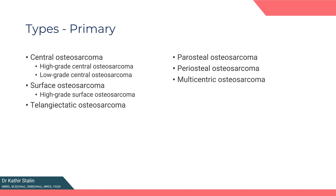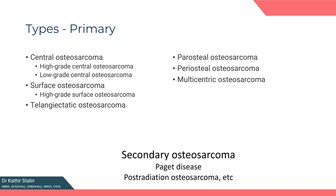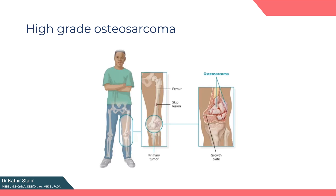Secondary osteosarcoma can occur with diseases like Paget's disease, bone lesions, and post-radiation causes. The high-grade intramedullary osteosarcoma is also called classical osteosarcoma. It is the most common type and primarily affects children and young adults around the knee — that is, the distal femur or proximal tibia — with a second peak possibly manifesting in late adulthood. Other common sites include the proximal humerus, proximal femur, and pelvis.